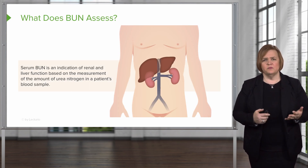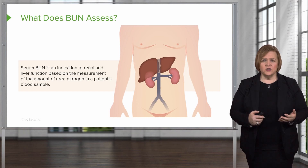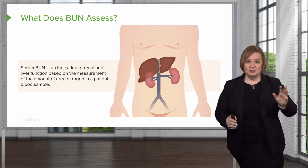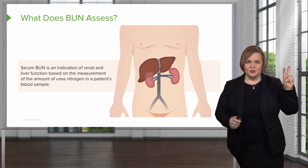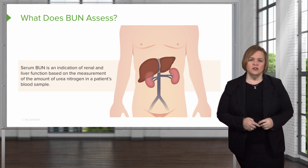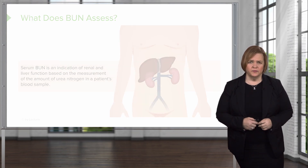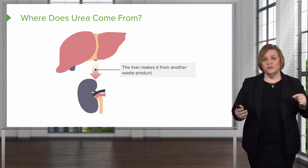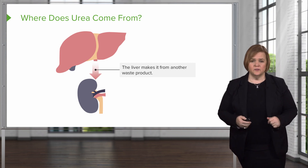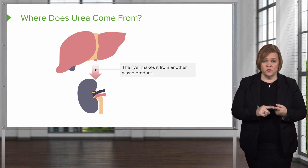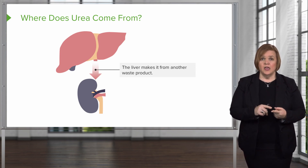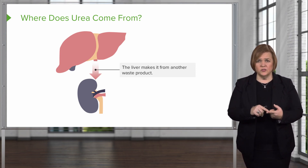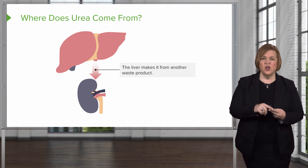What does the BUN tell us? It's an indication of both your renal function and your liver function — one test, two organ systems. That lets us know the amount of urea nitrogen in a patient's blood sample. Both the liver and kidneys are involved: the liver makes urea from another waste product. A BUN is the measure of urea in your blood — the blood urea nitrogen content. Urea comes from the liver making it from another waste product.